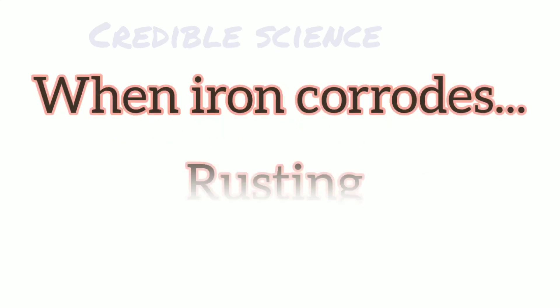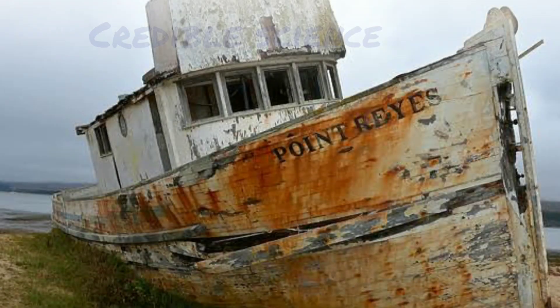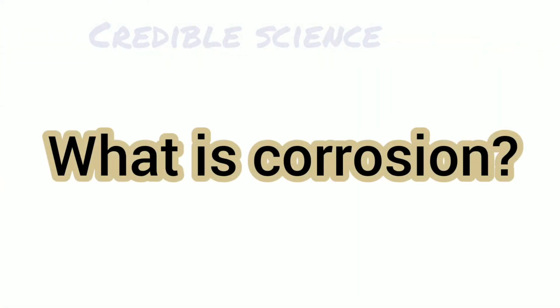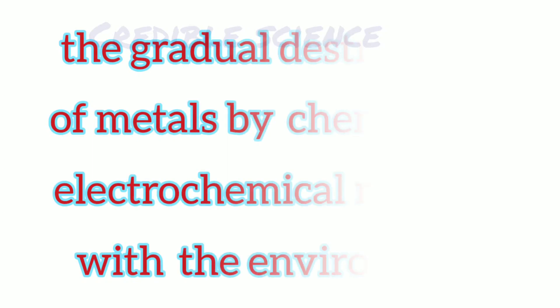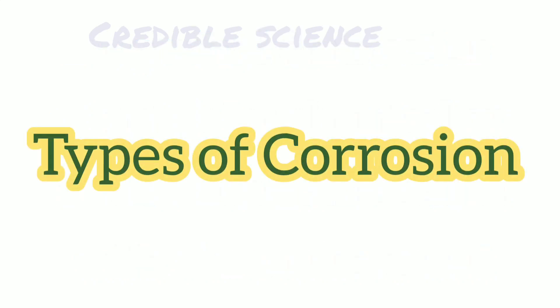When corrosion happens in iron, we call it rusting. What is corrosion? That old wrecked ship you see here is rusted. Since it is made of iron, we call it rusting; otherwise it is corrosion. The gradual destruction of metals by chemical or electrochemical reaction with the environment is called corrosion.